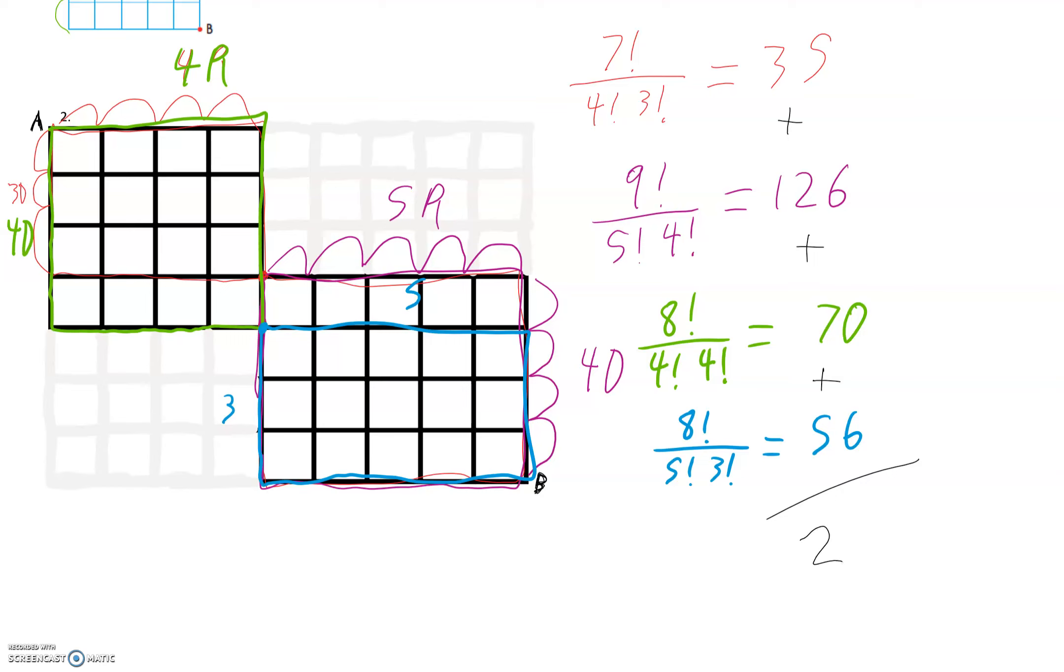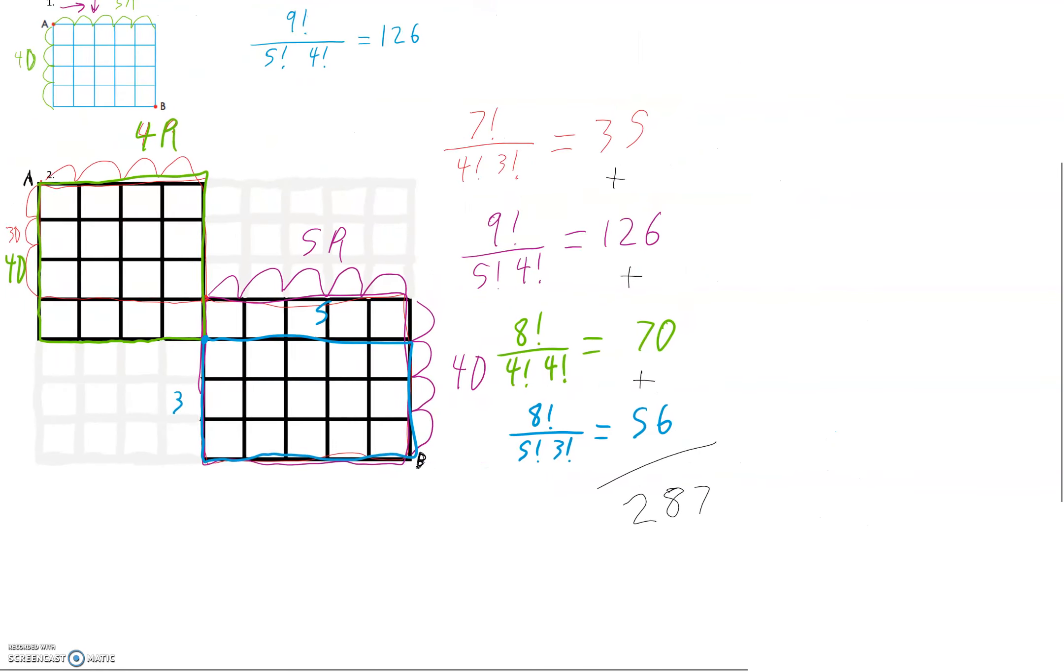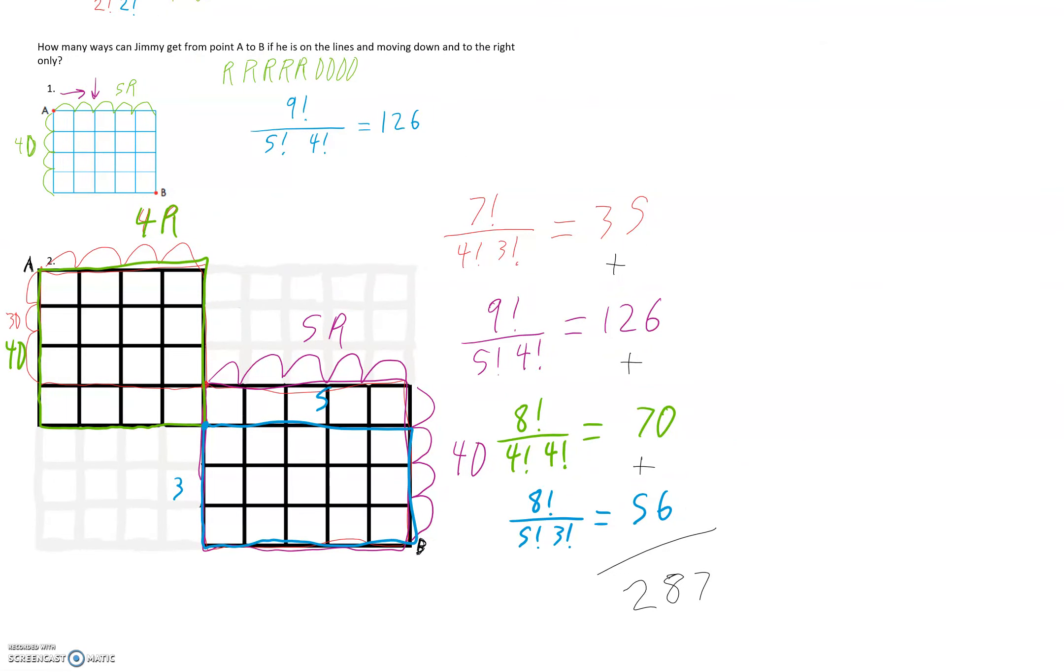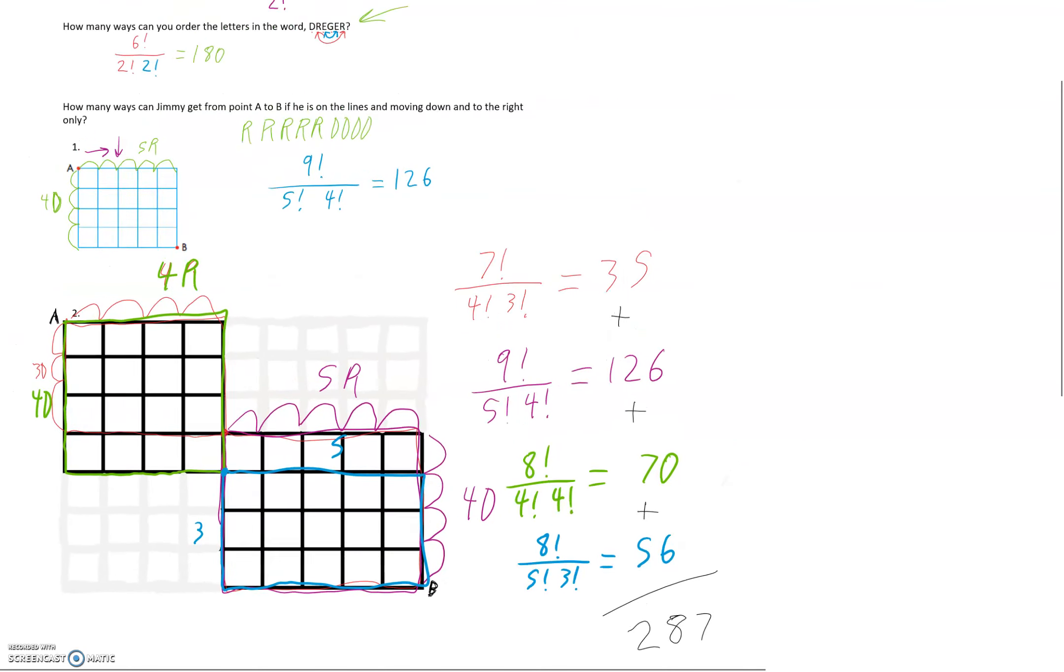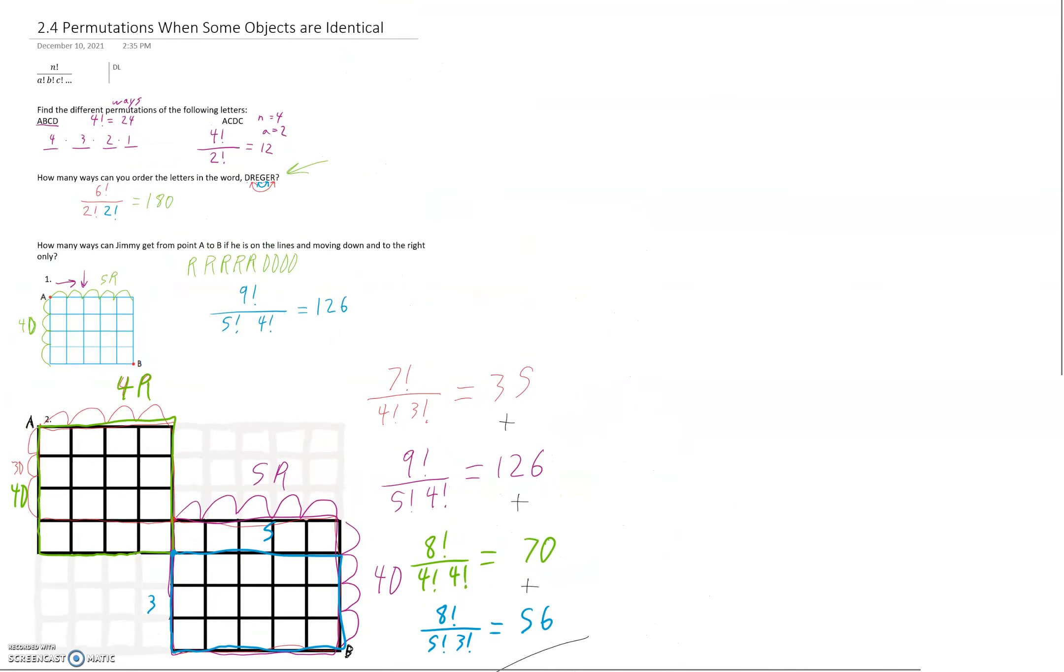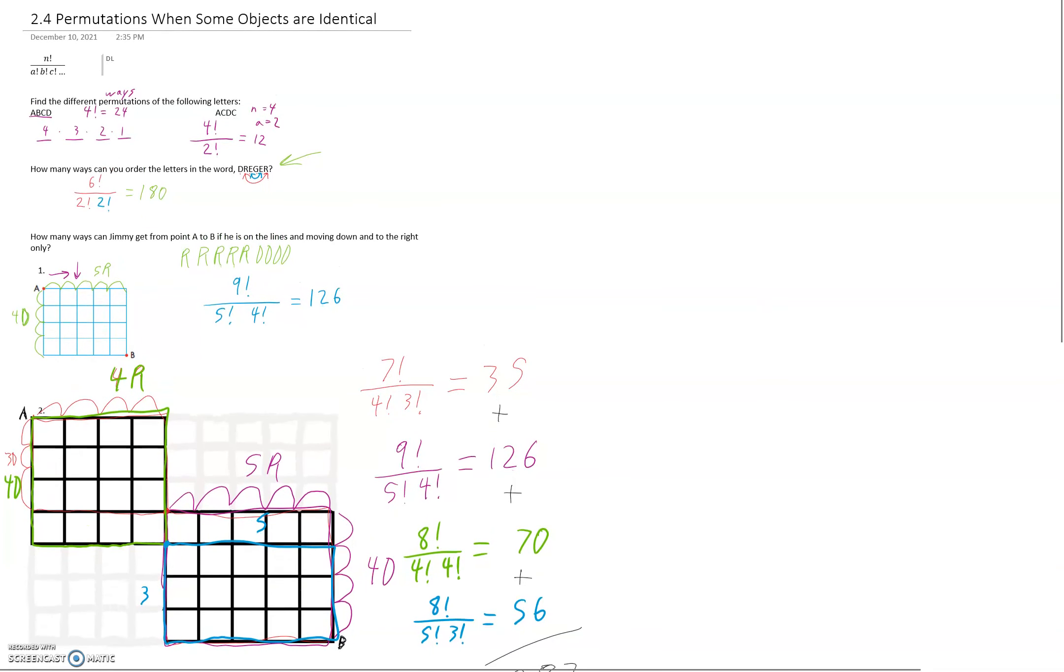So 287 options with this partially pinched map or grid. All right. I hope that this video helps you understand permutations when some objects are identical. Good luck.